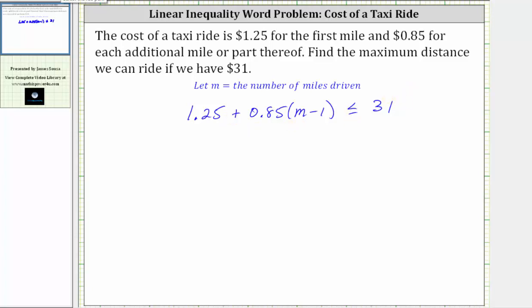For the first step, we will clear the parentheses by distributing, which gives us 1.25 plus 0.85 times m is 0.85m. And then we have 0.85 times negative one, which gives us minus 0.85, and this must be less than or equal to 31.